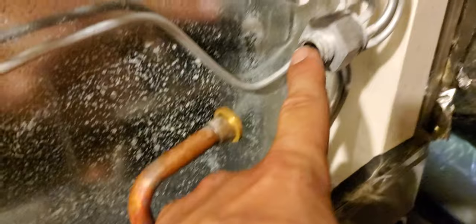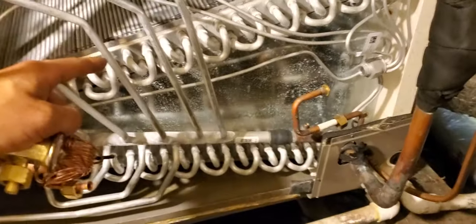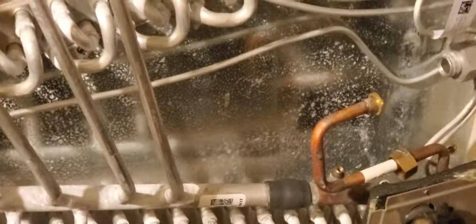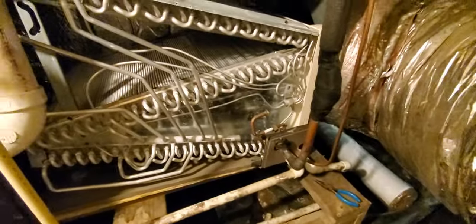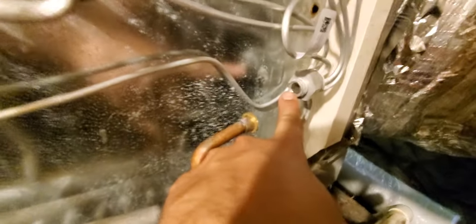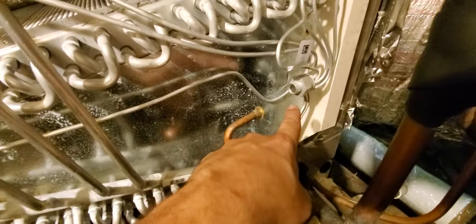If you do go more than a quarter turn, you're going to strip this out. And then you're going to have to get a whole new coil, which is going to suck for you. And I've had to do that, and I know how bad it is. So definitely go no more than a quarter turn past hand tight. Use nitrogen so that you can make sure this doesn't leak.